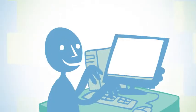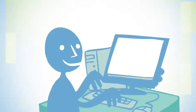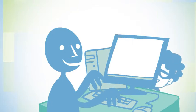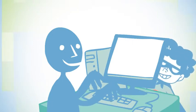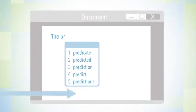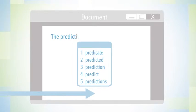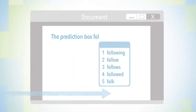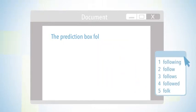You've probably noticed that WordQ's word prediction box follows you as you are typing, which is great because it's always right next to the word that you're trying to spell. On the other hand, some people prefer to move that prediction box and keep it in a specific spot.